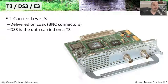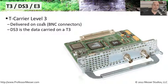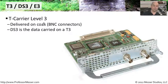The T3 is usually the next level up — that's the T carrier level three. It usually comes into your facility on coax connections with BNC connectors at the end. You can see those BNC bayonets that plug directly into the T3 equipment.